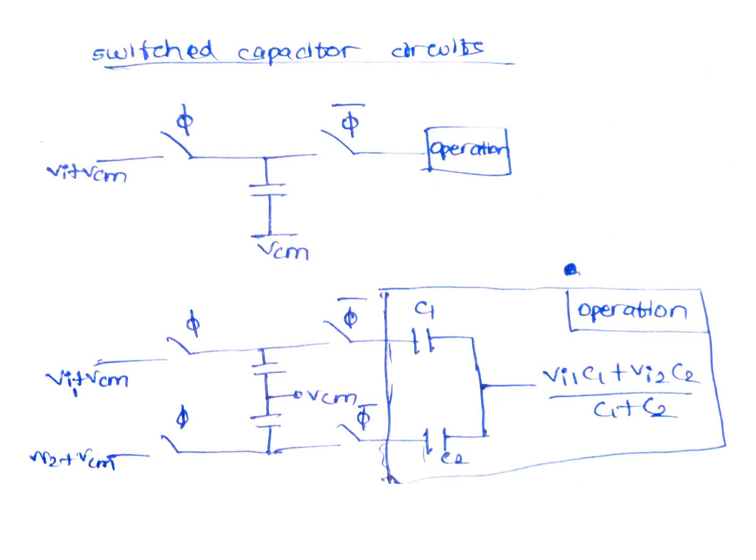Next comes the switched capacitor circuits. It includes sample and hold circuits and a logic or the operation. In the first figure, phi and phi bar are two different switches which are closed alternatively.